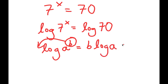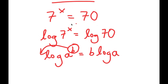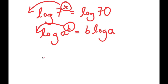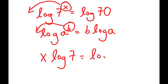This property is so useful because before, x was an exponent and it's really hard to solve for x in that state. But now I can move x to the front and it becomes an actual term. So now I get x times log 7 is equal to log 70.